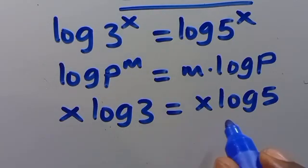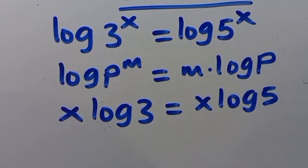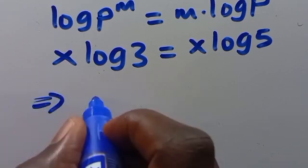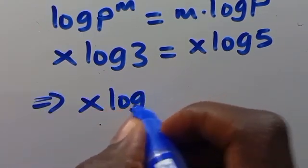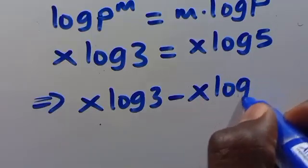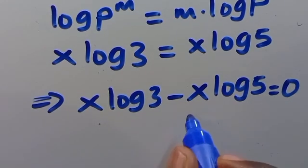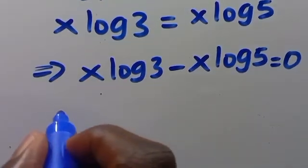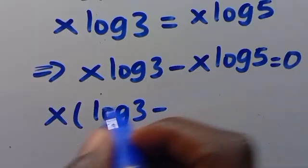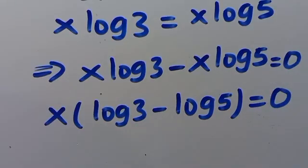So from here, don't cancel this x. If you try to cancel this x, you're not going to have a solution for the problem. So let's have it as x multiplied by log 2, minus x multiplied by log 5, then set it equal to 0. What is common between these two terms is x. So we're going to factor x outside, giving log 2 minus log 5 in parentheses equals 0.